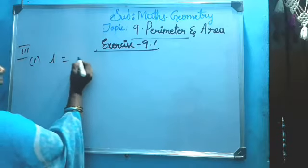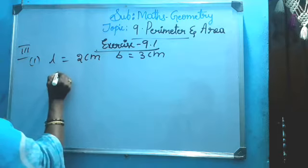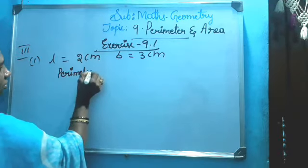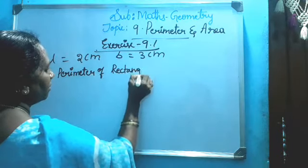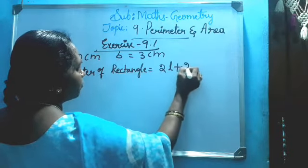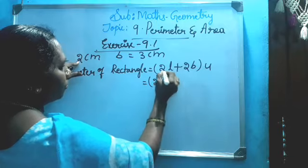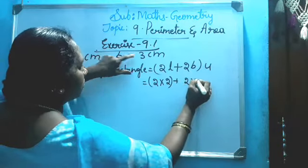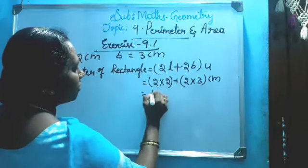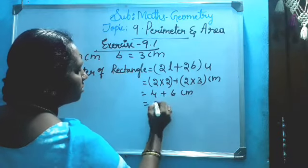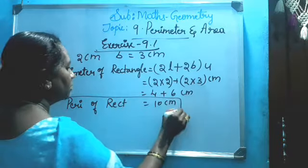First one: length how much? 2 cm, and breadth 3 cm. Apply the formula: perimeter of rectangle is equal to 2 into length plus 2 into breadth. So 2 into 2 plus 2 into 3 centimeters. Two twos are 4, plus two threes are 6. Total: 10 centimeters. Perimeter of rectangle is equal to 10 centimeters.